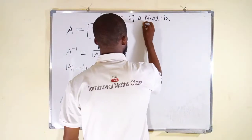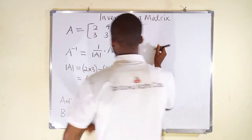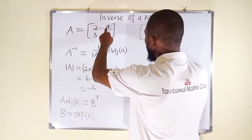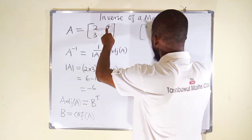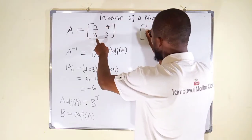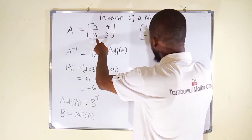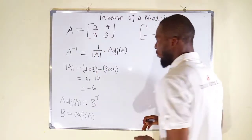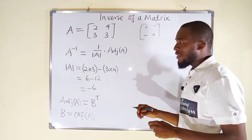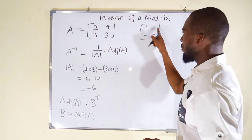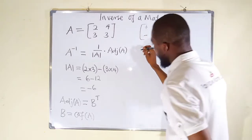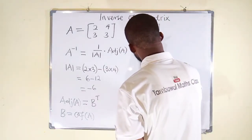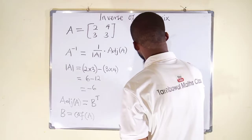So let us find the cofactors. You should know the sign pattern for a 2x2 matrix: the entries follow positive, negative, negative, positive. So whatever value you obtain, you have to multiply by the respective sign to get the cofactors of matrix A.